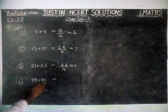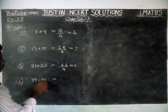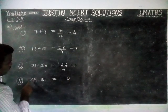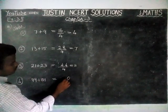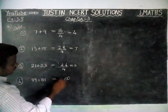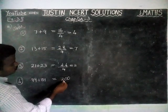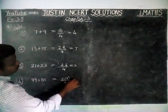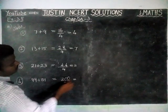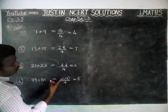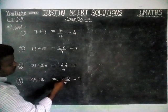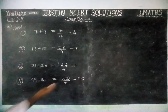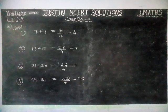99 plus 101 is equal to 200. We will divide it by 4: 5 fours are 20, so 200 divided by 4 is equal to 50. This answer is also divisible by 4.